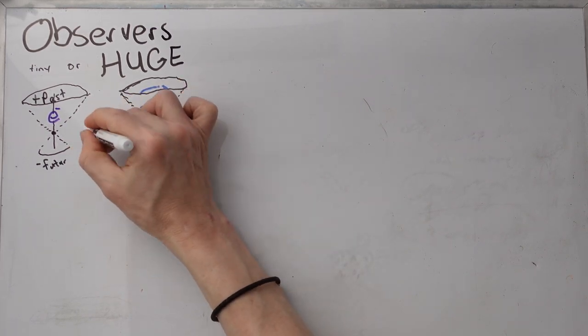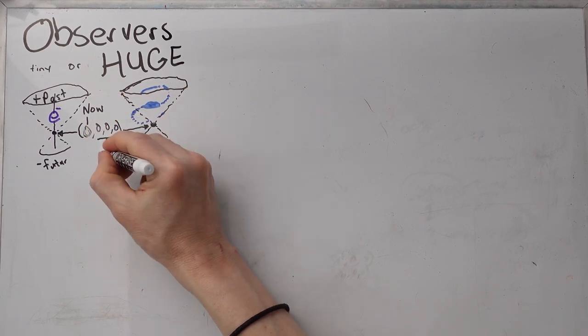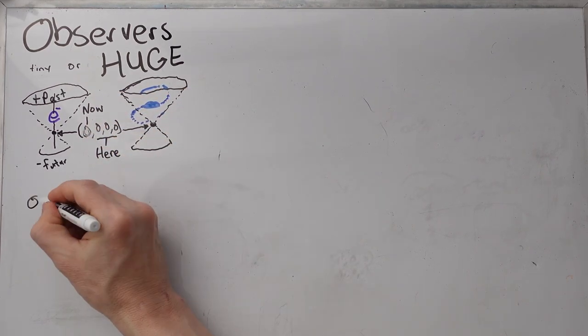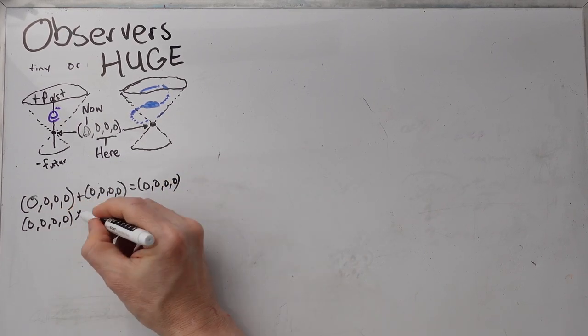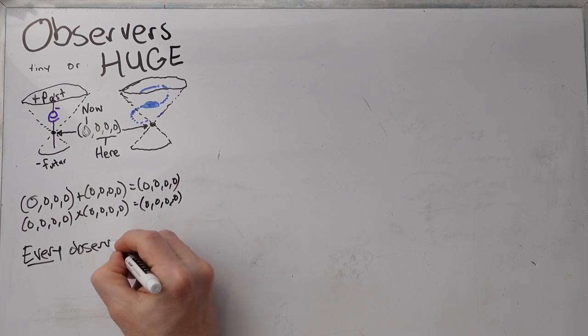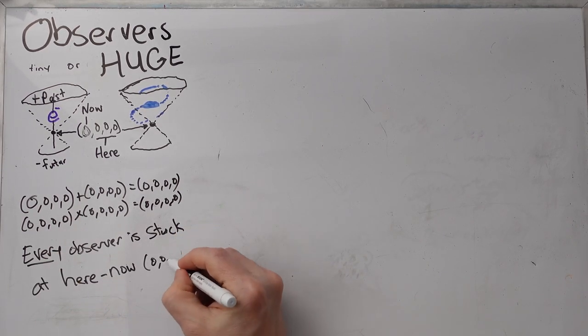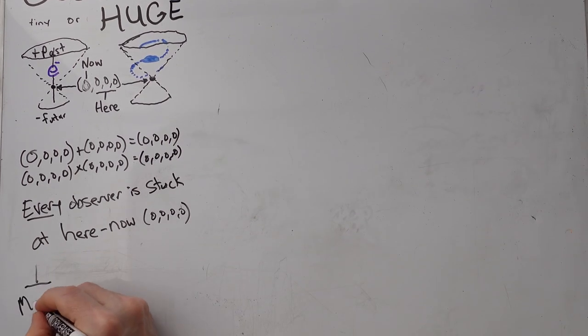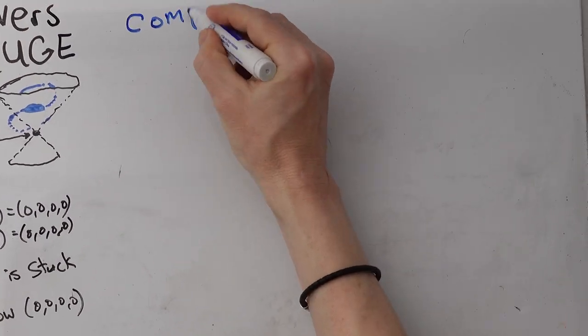And you can do math on that. Now both of these have a here-now. Now being the first number, here being the other three. And we know the math. Zero plus zero equals zero. Zero times zero is zero. And that means that every observer is stuck at here-now. And I call this my inverse Mach principle. I think observers are the key.